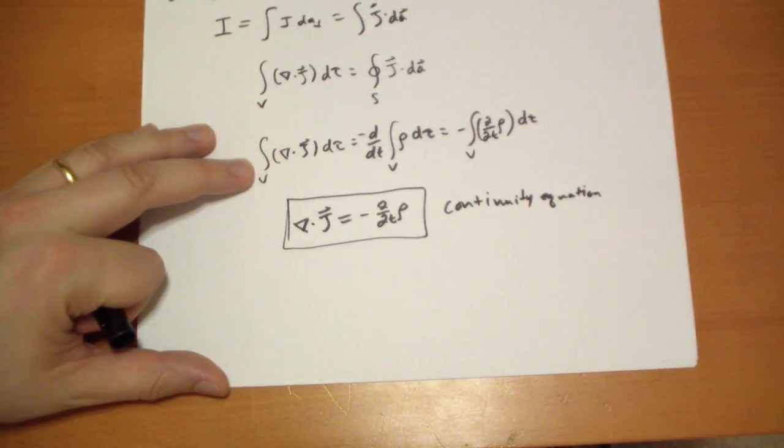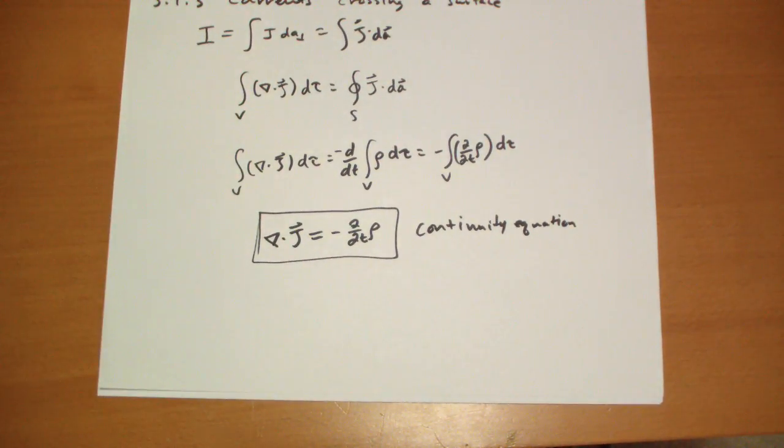Oftentimes when you're solving problems that involve currents, which magnetic problems tend to, this is the one equation that's assumed, kind of like in electrostatics. The one equation that's assumed is that the potential at infinity is zero, or whatever it is. So there you go, the continuity equation.